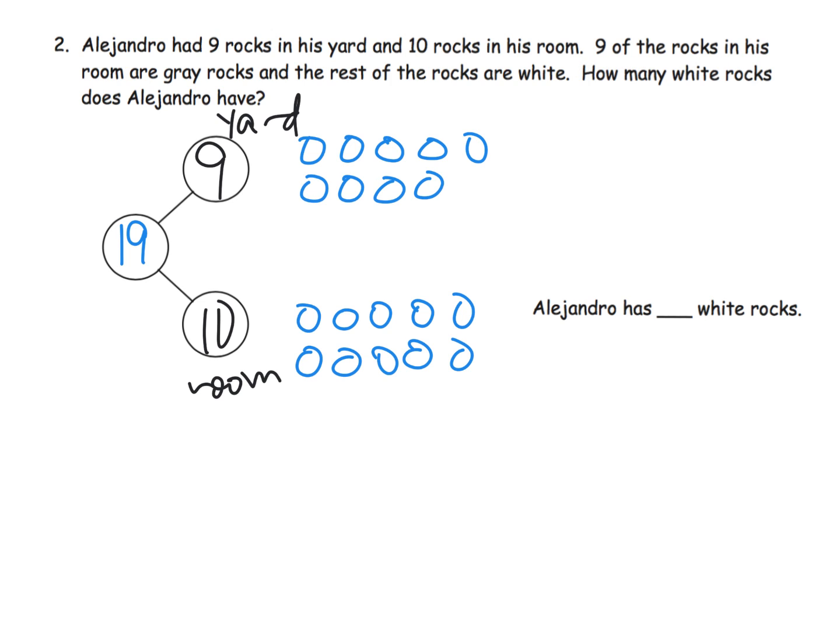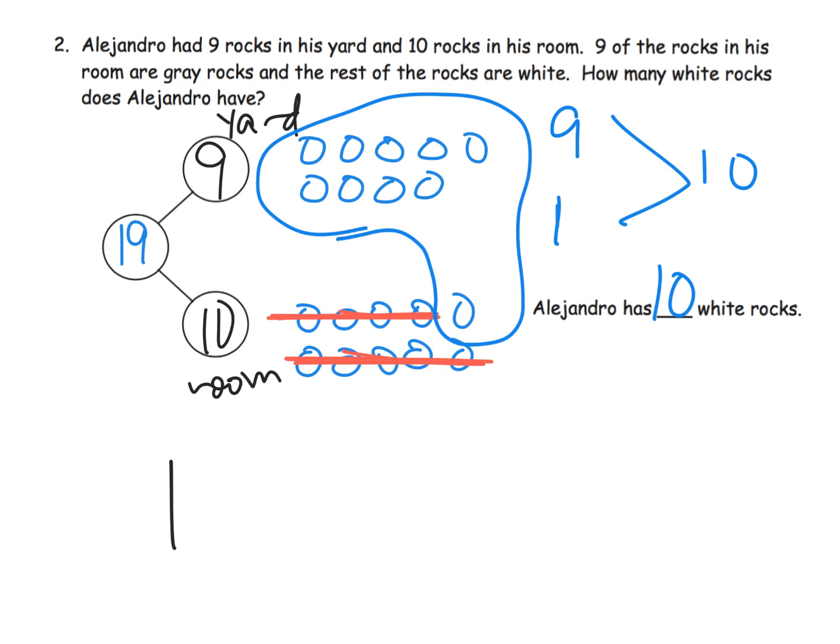Now it says 9 of the rocks in his room, so that's these guys, are gray and then everything else is white. So we're going to cross off 9 of them. So we're going to cross off 5 down here plus 4 right here. And all of the rest of the rocks are white. So that's going to be 9 plus 1 is 10. So we have 10 white rocks. And what would that number sentence be? The number sentence would be 19 minus 9 equals 10.